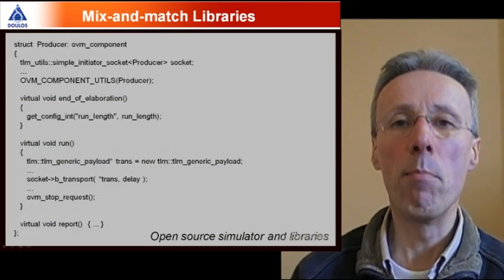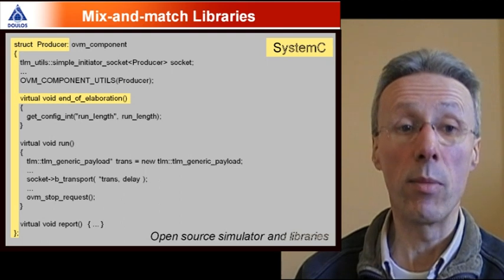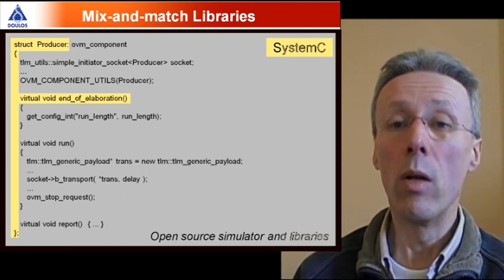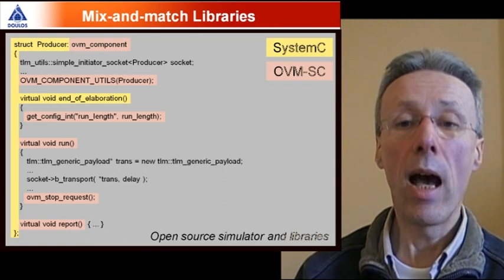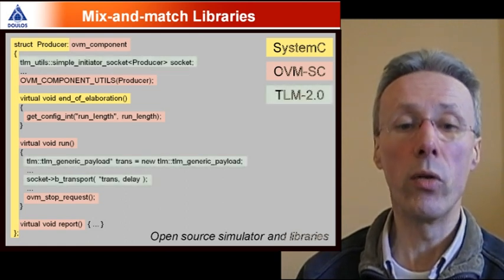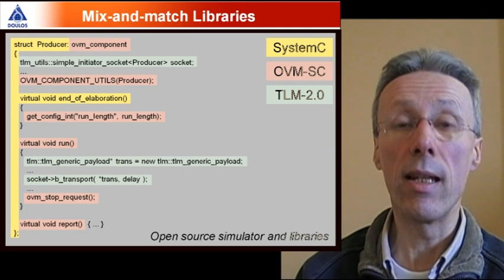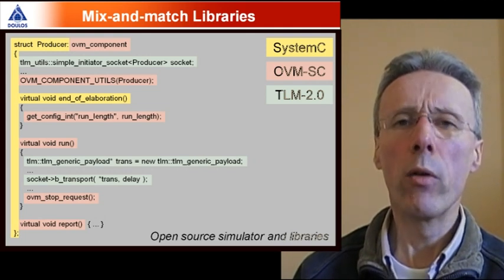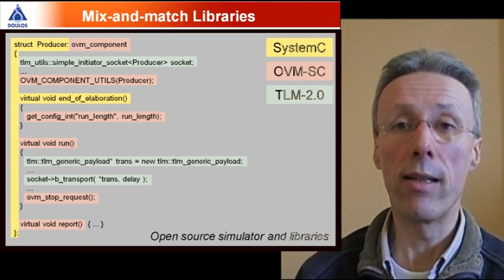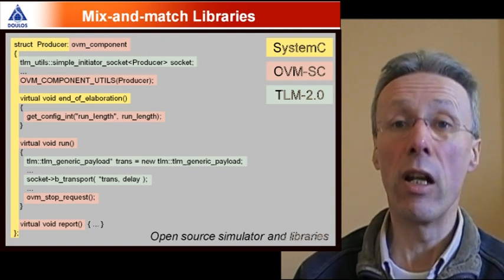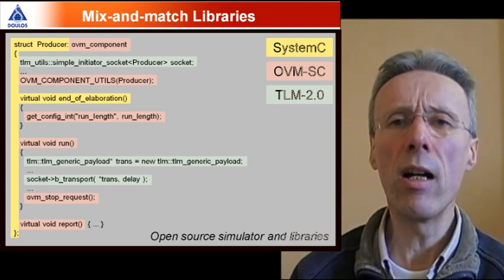So I'll start by emphasizing the mix and match nature of this example. The example is written in SystemC, our producer is a SystemC module. Within that SystemC module we're making use of features from the OVM-SC library that is features imported from OVM and also making direct use of the OSCE TLM2.0 standard. So this complete example will run using the OSCE open source simulator and using standard and open source libraries. Of course if you want to make use of SystemVerilog and E then you'll need an appropriate tool and license from your EDA vendor. But in this particular example we're successfully running OVM-SC code simply using open source libraries. So let's dive down into the detail.